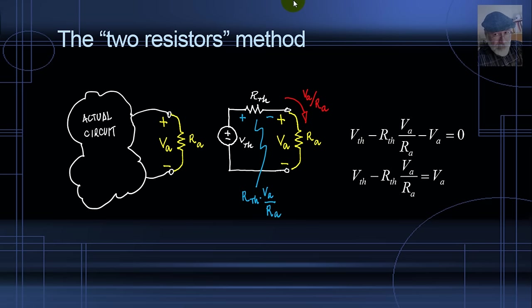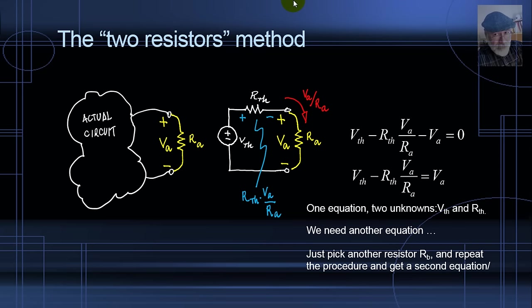We need another equation. If we have performed the other test as an open circuit and we've already determined who is V_TH, we can simply solve for R_TH. But let's say that we do not do an open circuit test. We just apply a second resistor. In this case, we need another equation.